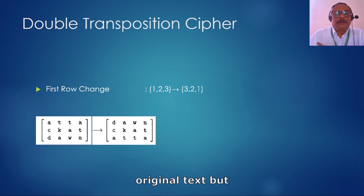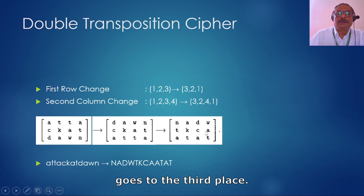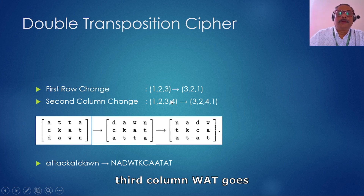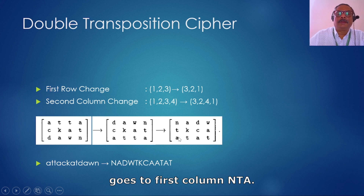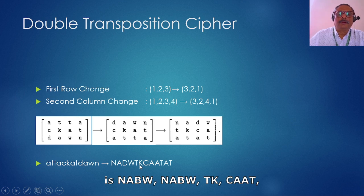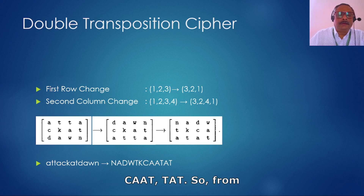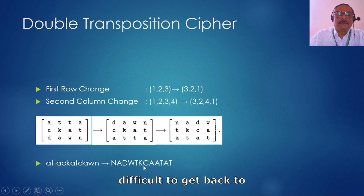We don't stop there — we also change the columns. The first column 'DCA' goes to the third place, the second column 'ATK' remains at the second column, the third column 'WAT' goes to the fourth column, and the fourth column 'NTA' goes to the first column. After reading the result, what we get is: N A D W T K C A A T A T — so 'attack at dawn' now looks like 'NADW TKCA ATAT.'